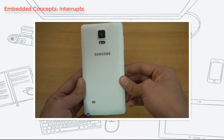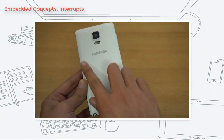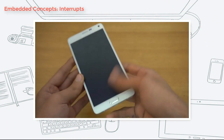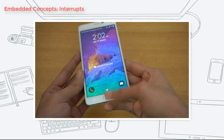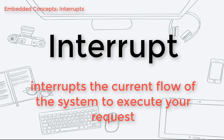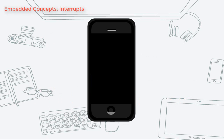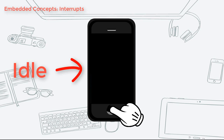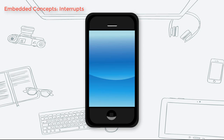Have you ever noticed that when you press the home button of your cell phone when it is idle, the screen turns on? That is a simple example of an interrupt. Basically, an interrupt is an event that interrupts the current flow of the system in order to execute your request. In the case of the cell phone, its current state is idle. When the home button is pressed, an interrupt is issued to the system to wake it up and to turn on the display. The action of depressing the home button is an external interrupt.